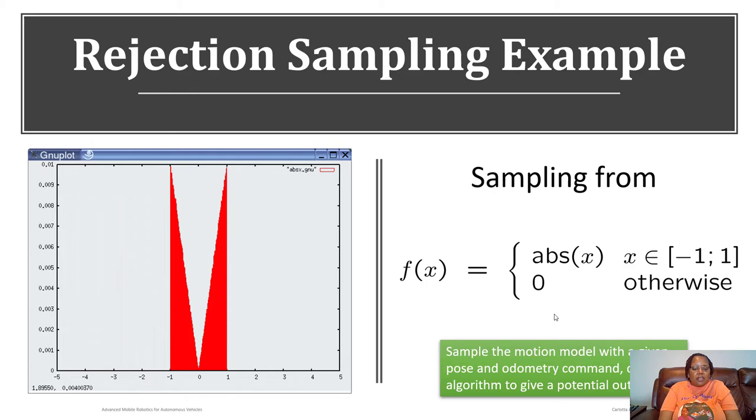Here's an example of sampling the function the absolute value of x, where x is between negative one and one and zero otherwise. What you see here is it's possible to use the algorithm we just described to sample an arbitrary function. We can use this to sample our motion model with a given pose and odometry command. We're going to query our algorithm to give a potential outcome and compare this to what you would get if you did the actual motion model.